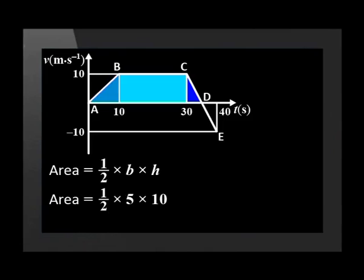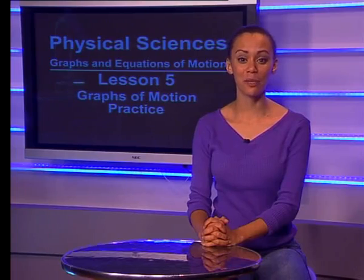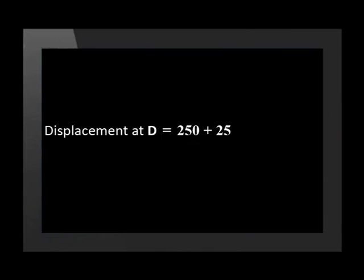Try now to calculate the displacement to D and let us see if your calculation matches ours. The area under the graph from C to D equals a half multiplied by 5 by 10, which equals 25 meters. The total displacement at D equals the sum of this displacement and the total displacement up to point C, so the total displacement at D equals 250 meters plus 25 meters, which equals 275 meters.